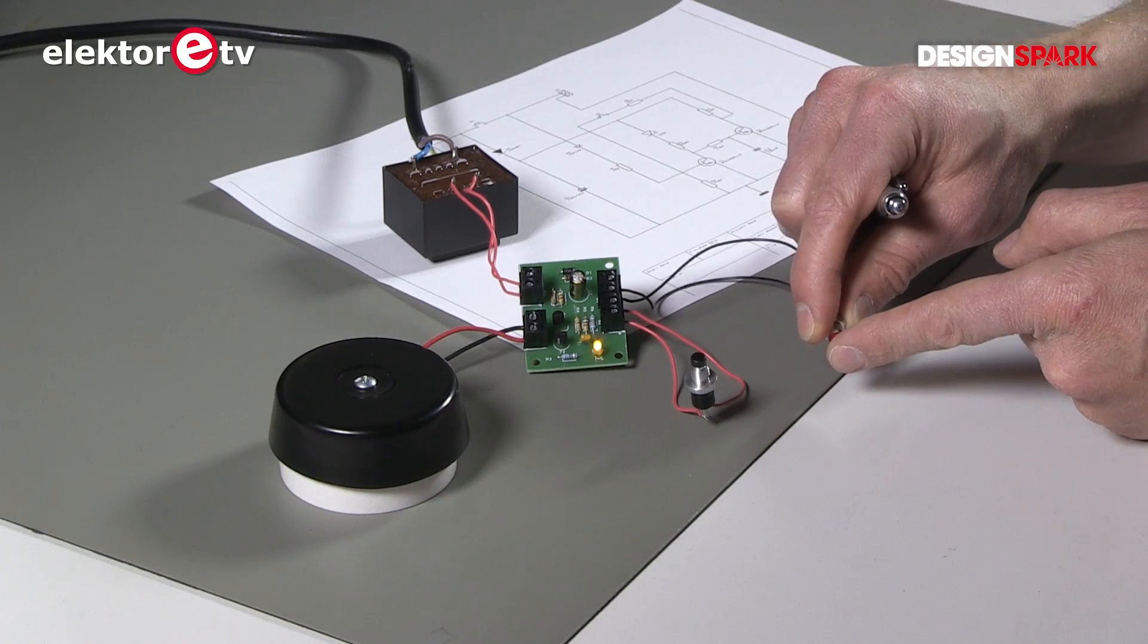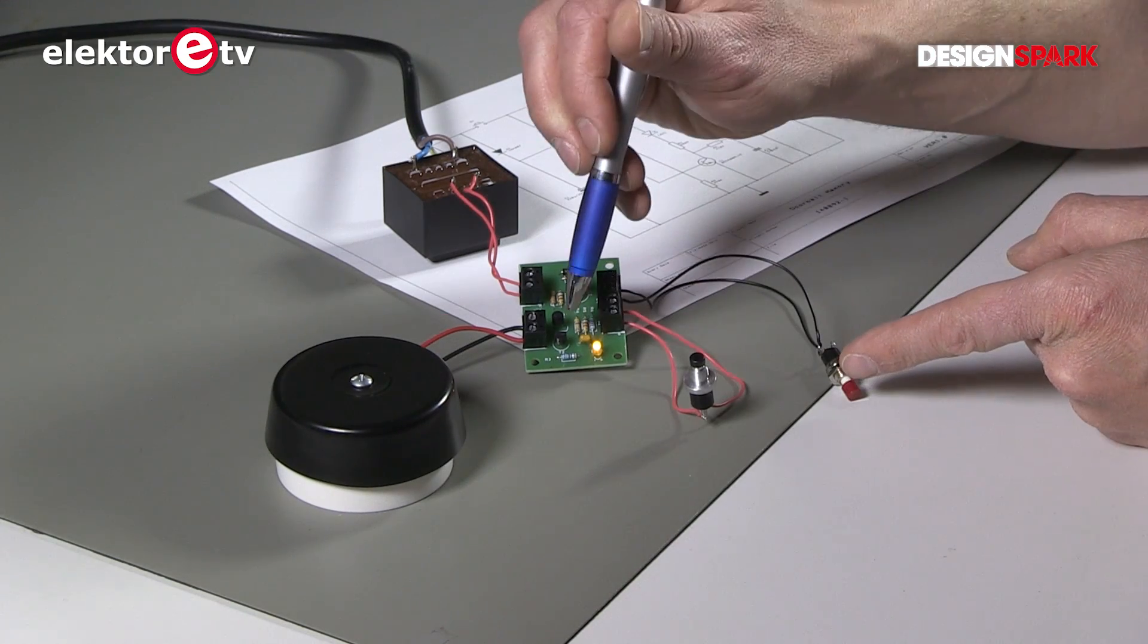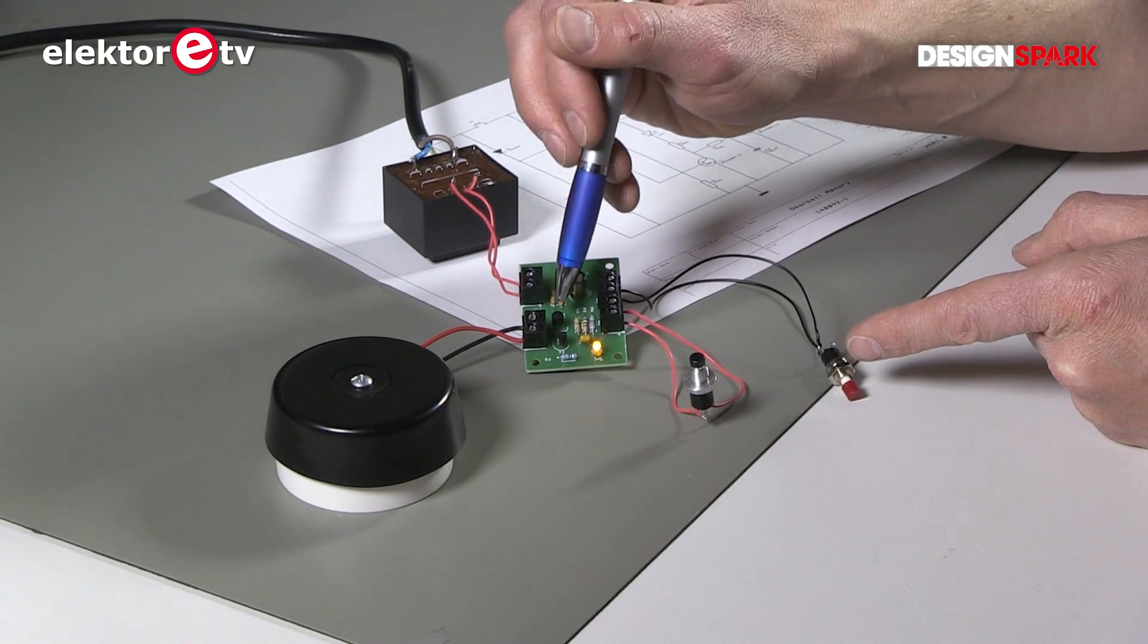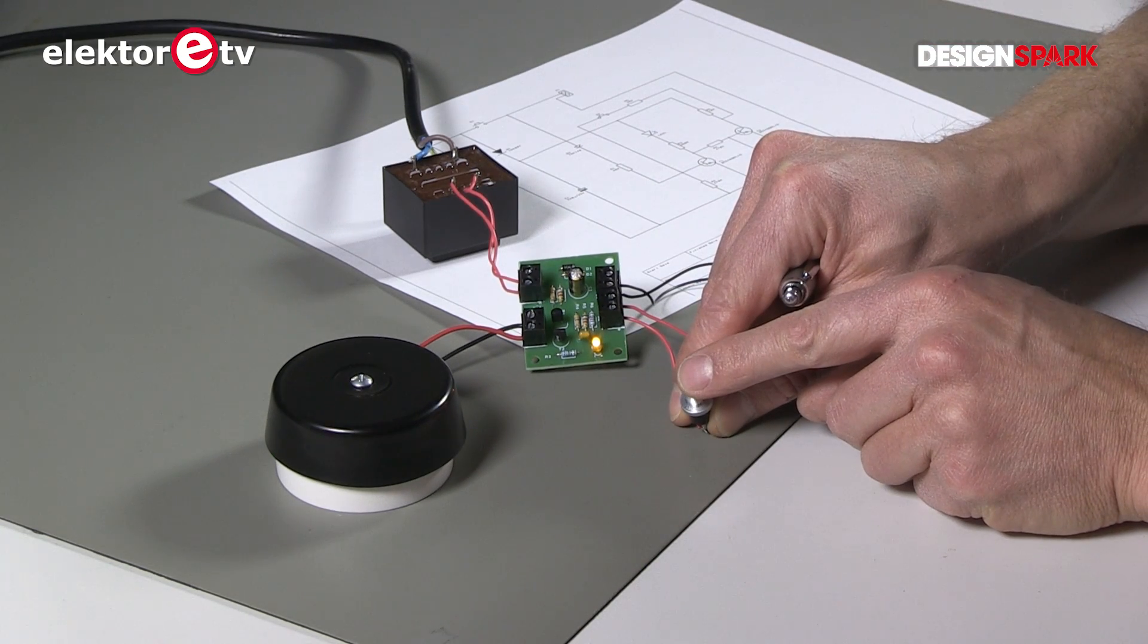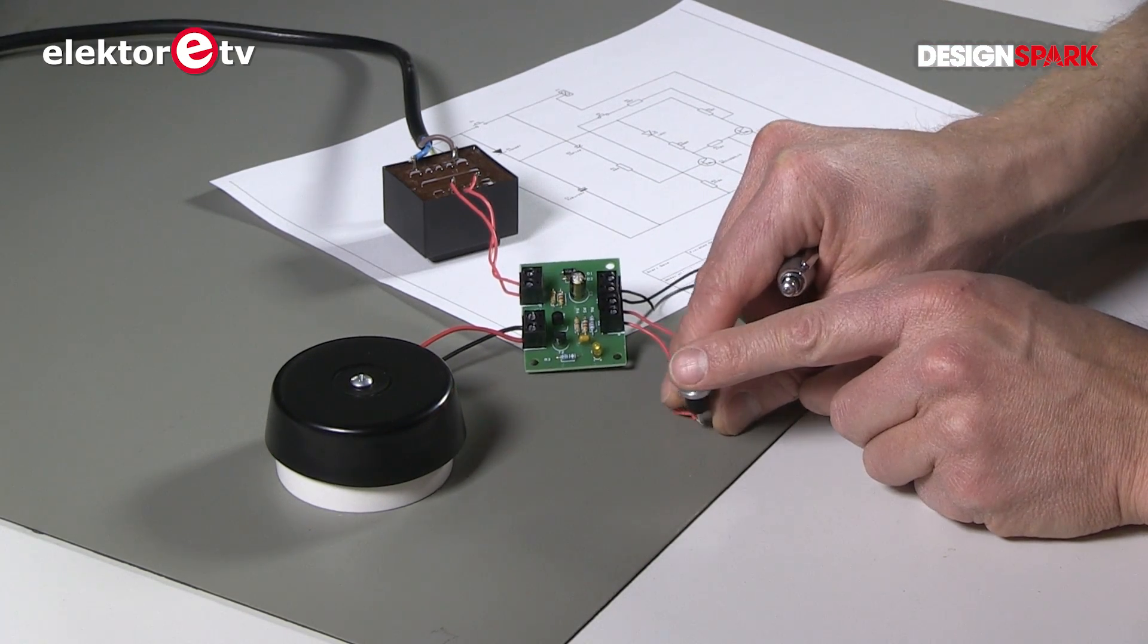So press the button, this one is now no longer conducting, this one is conducting. With this push button, I break the feedback and the LED goes off. That's it.